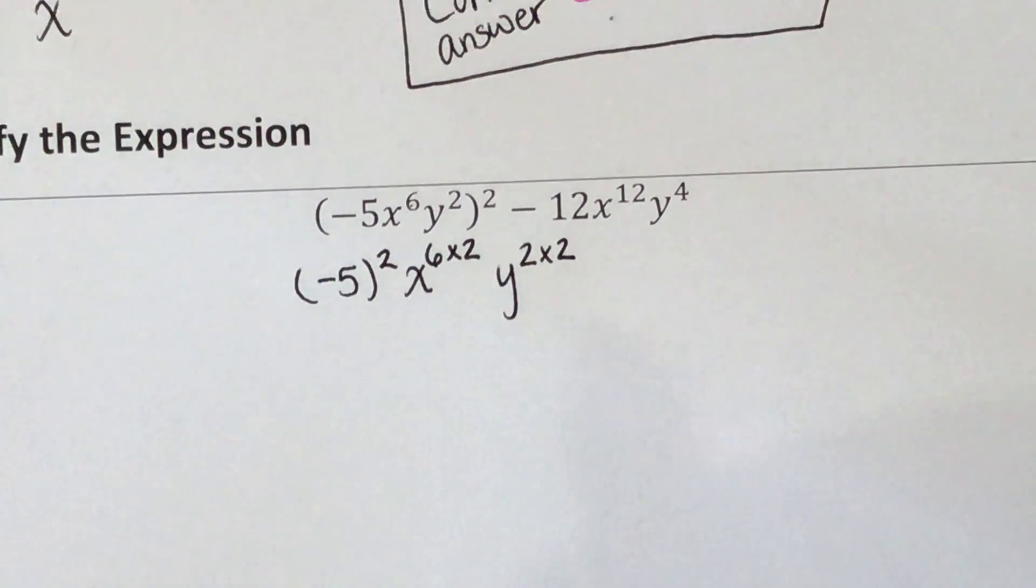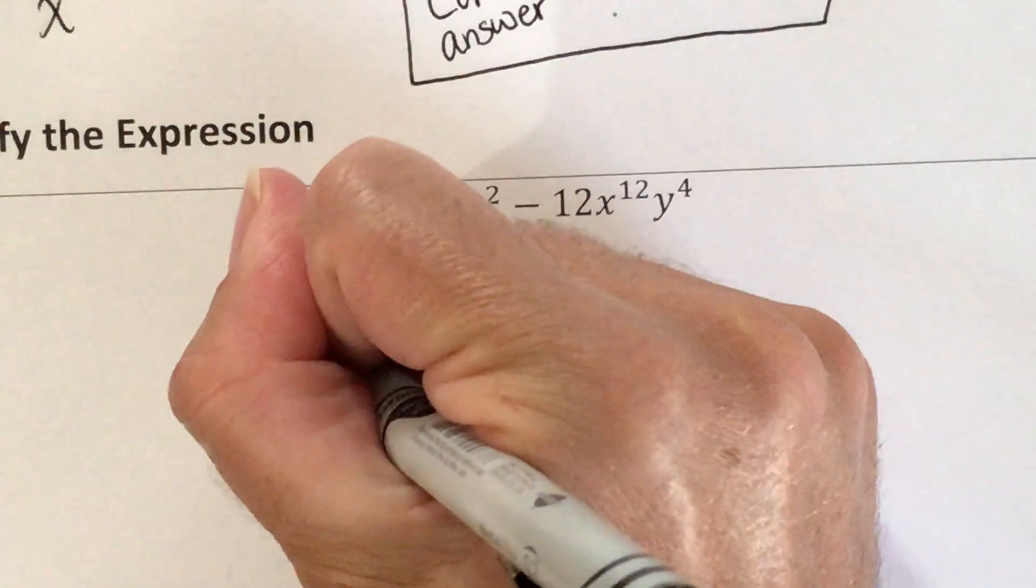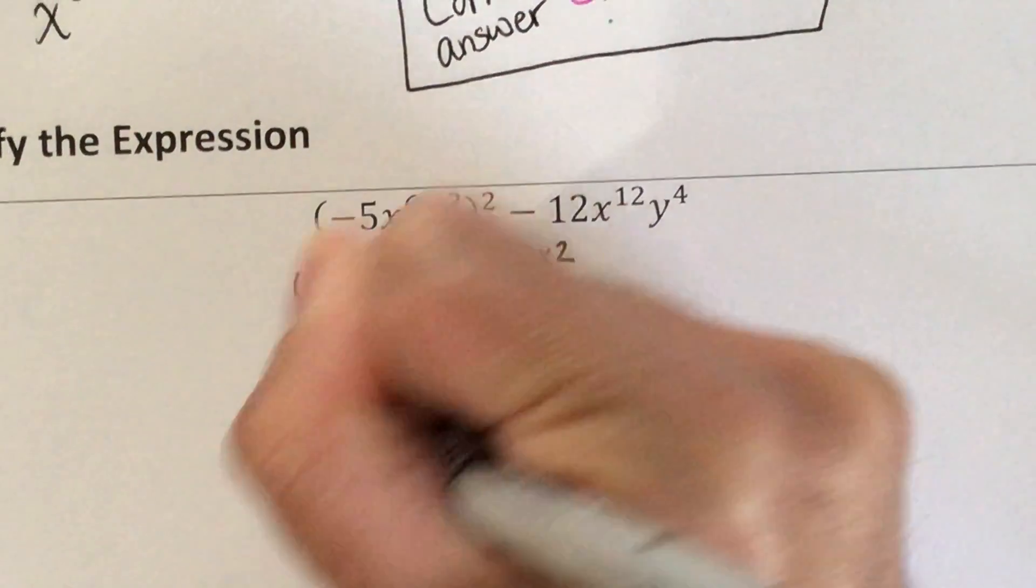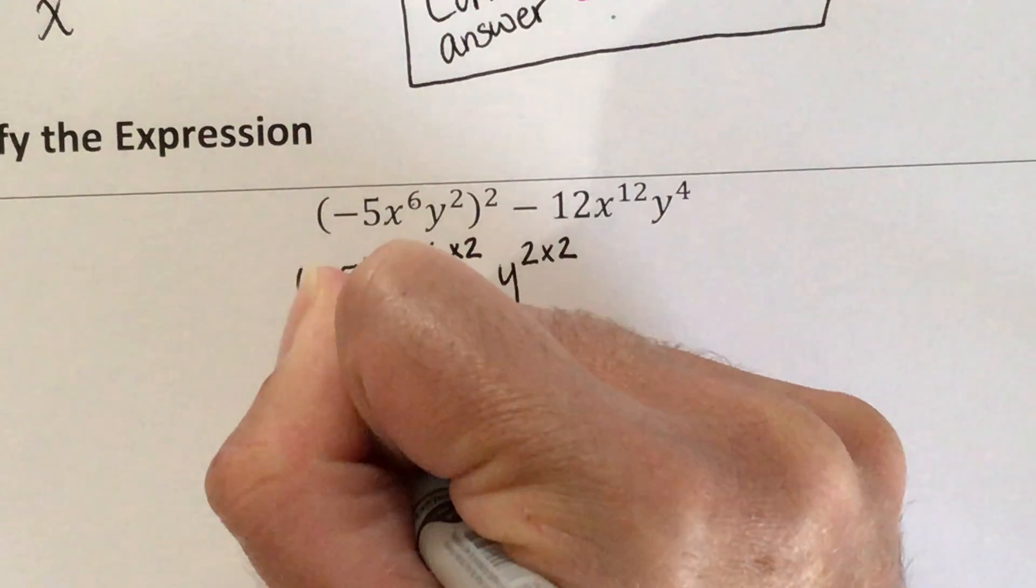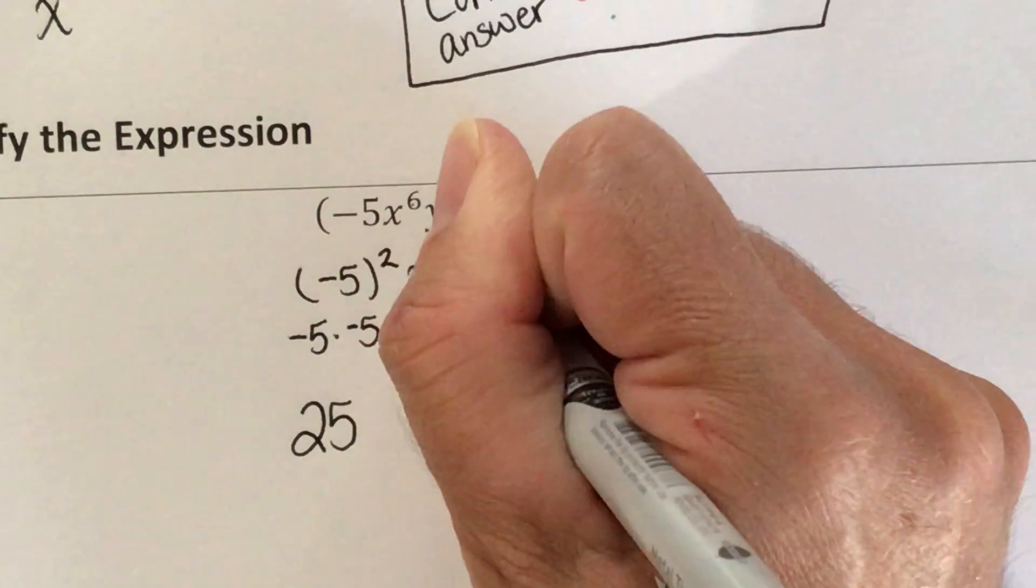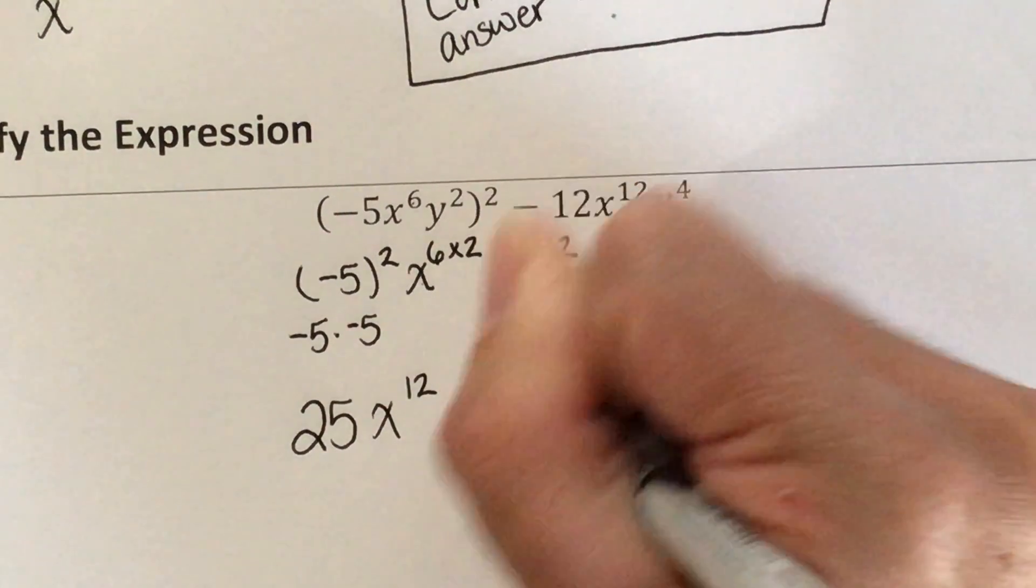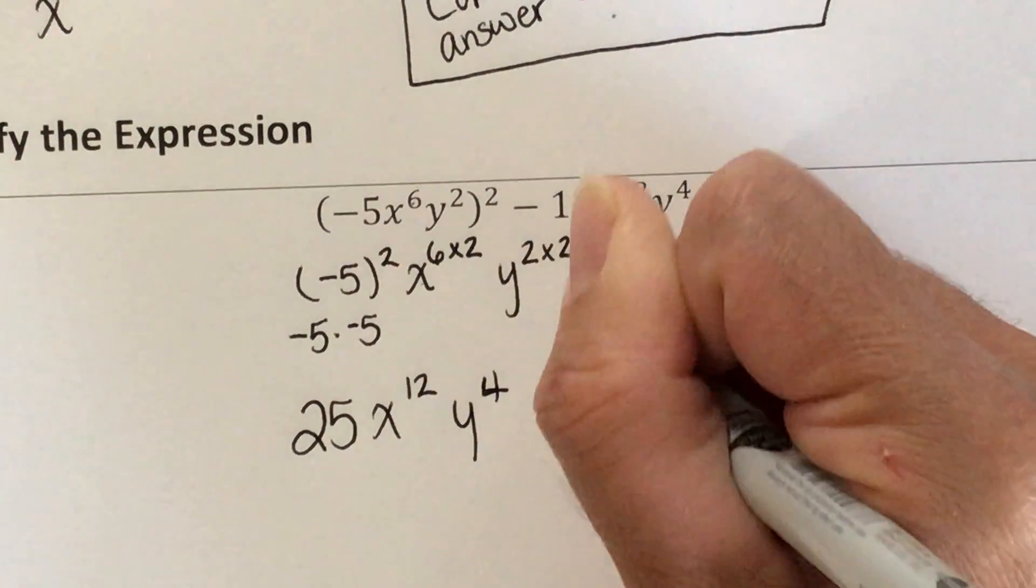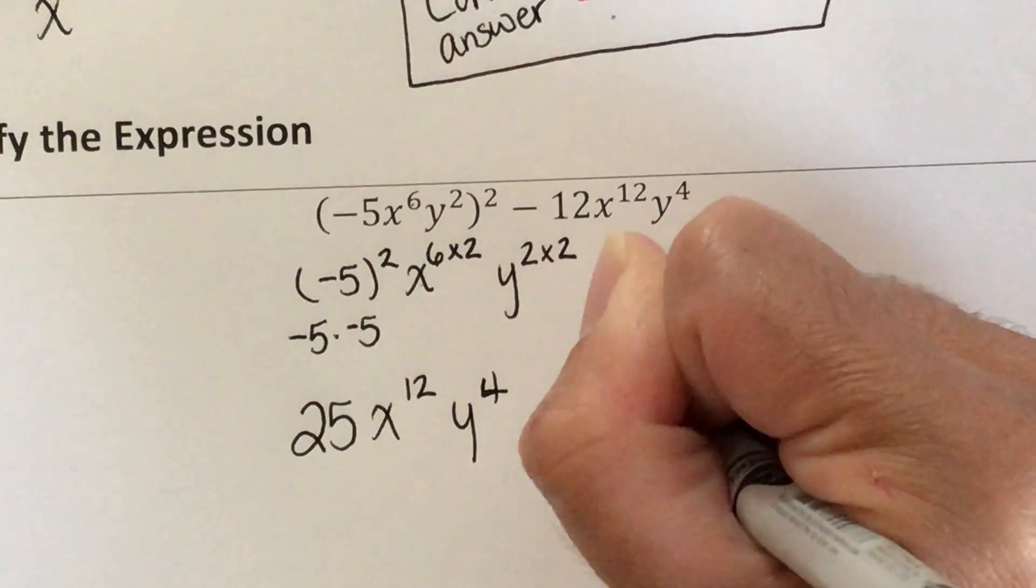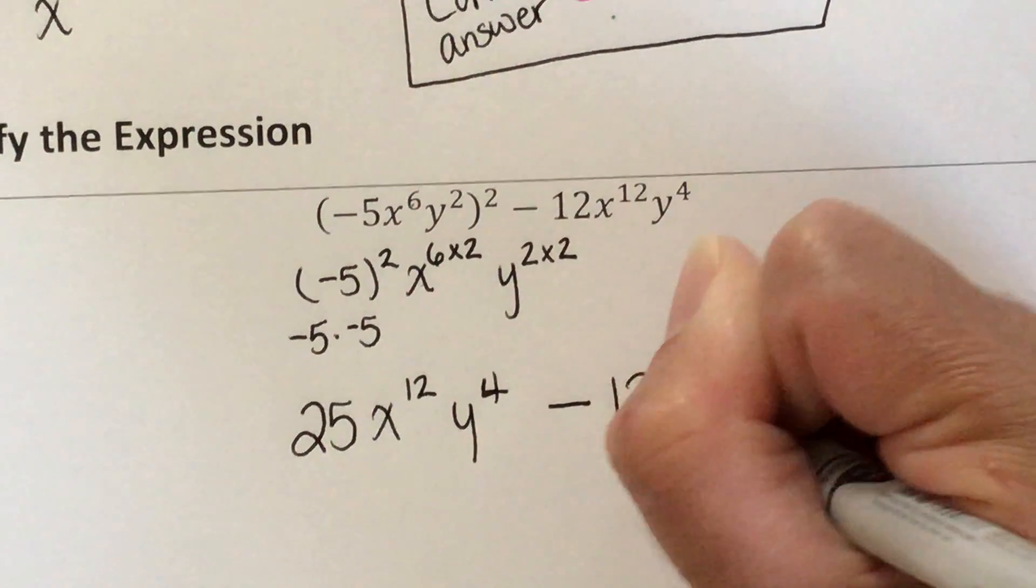So what is negative 5 squared? Well, that's negative 5 times negative 5. So that becomes a positive 25. Then x to the 12 and y to the 4th power. And so now I'm going to bring down my other term.